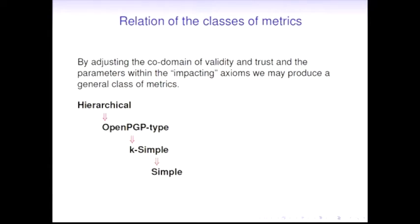We come to a broader class of metrics which are called hierarchical by adding these layers of validity and trust into the impacting axiom. Why are we actually interested in this pretty narrow or standalone class of metrics? First, it's the most simple one, and to the best of our knowledge we're not aware of any other works on axiomatization of these types of objects. We started with the most simple one, and two of them are actually used in practice - simple and OpenPGP - and they're hierarchically dependent.